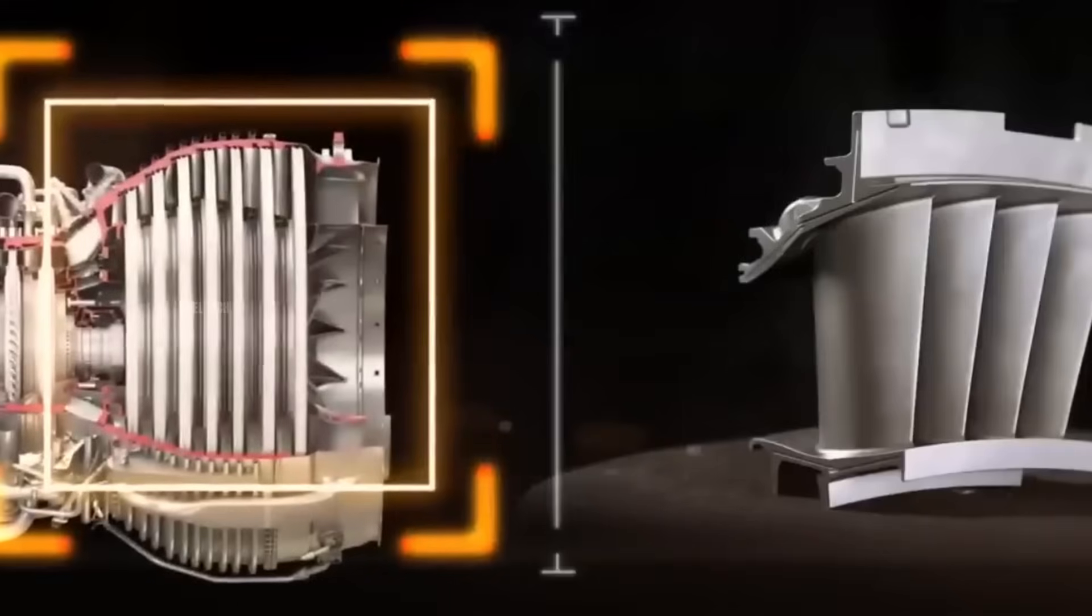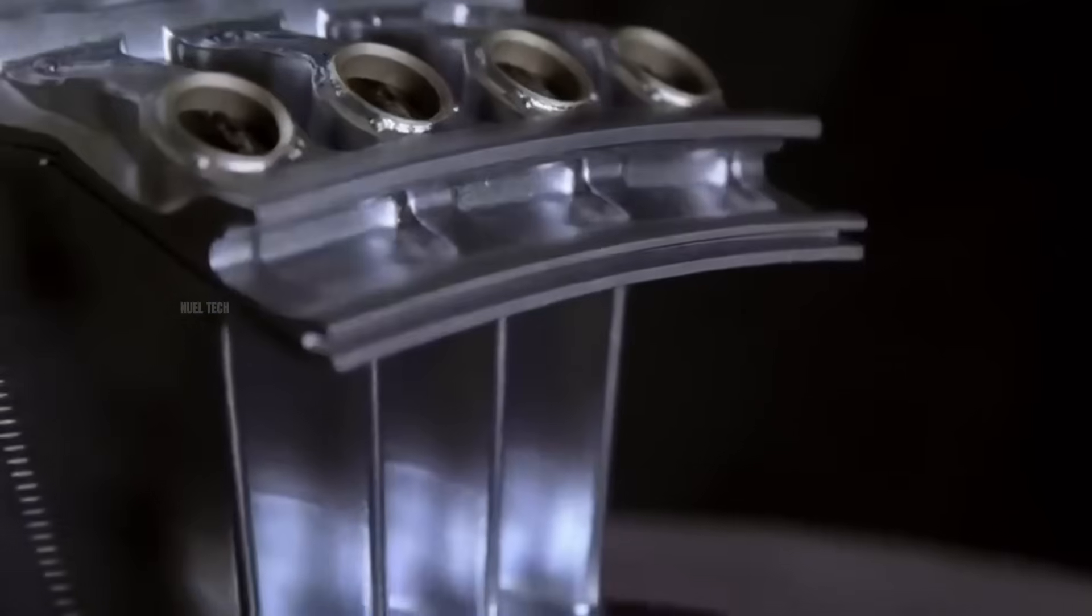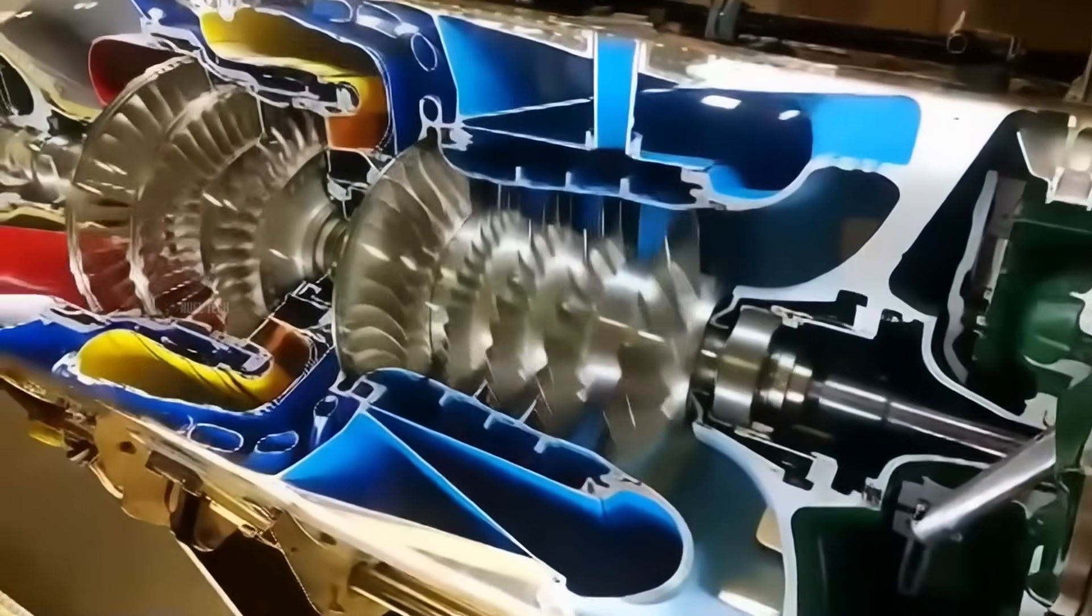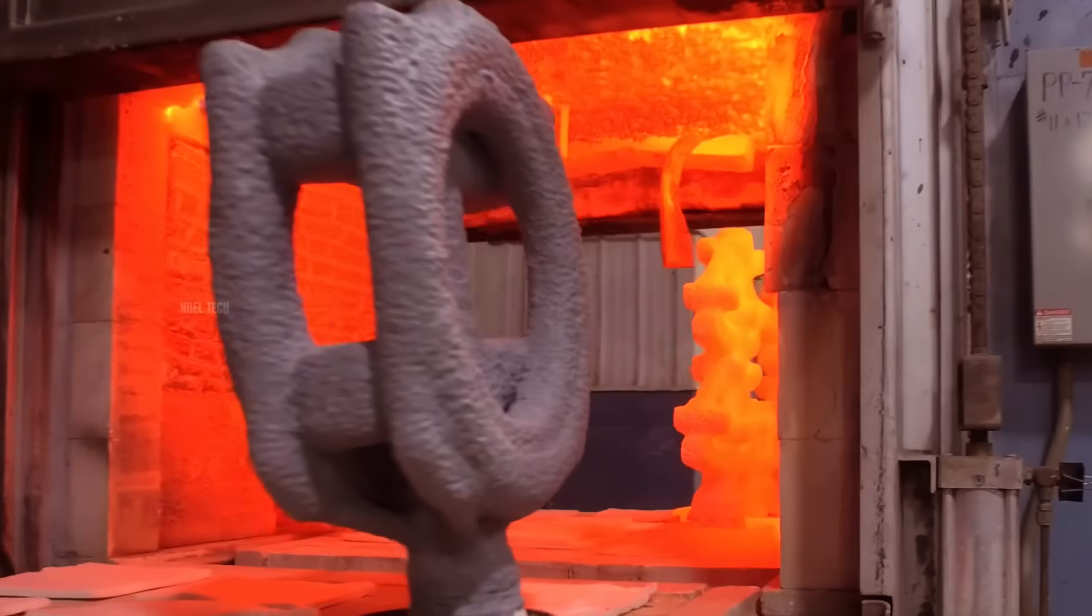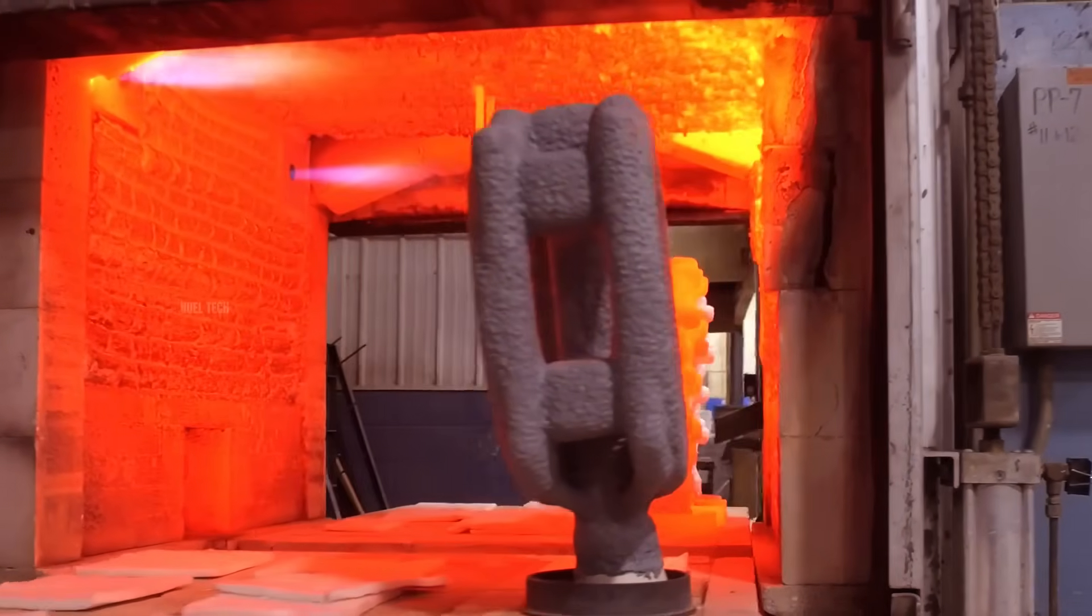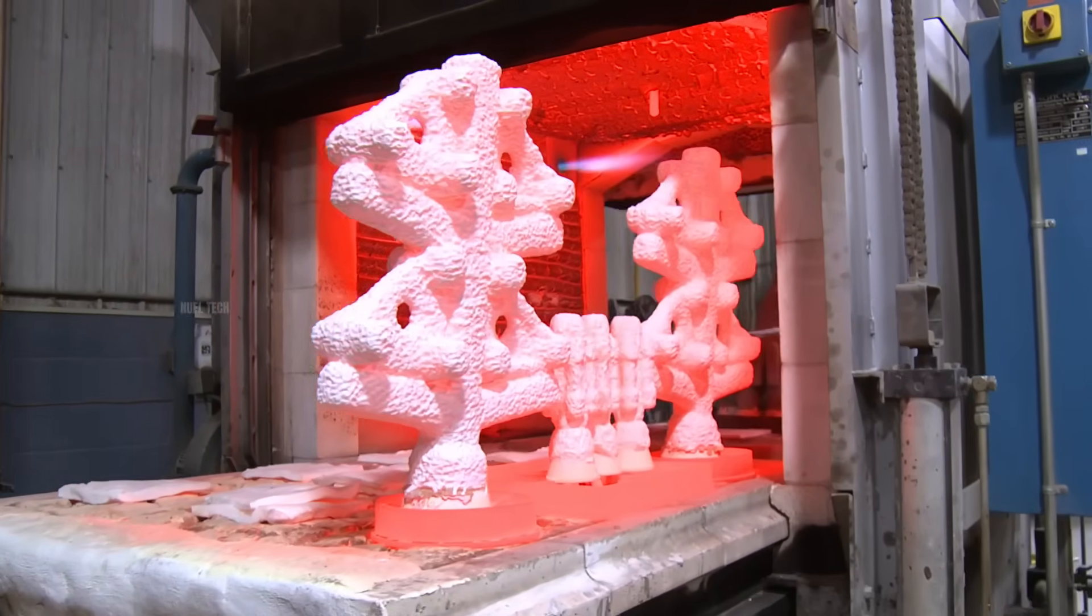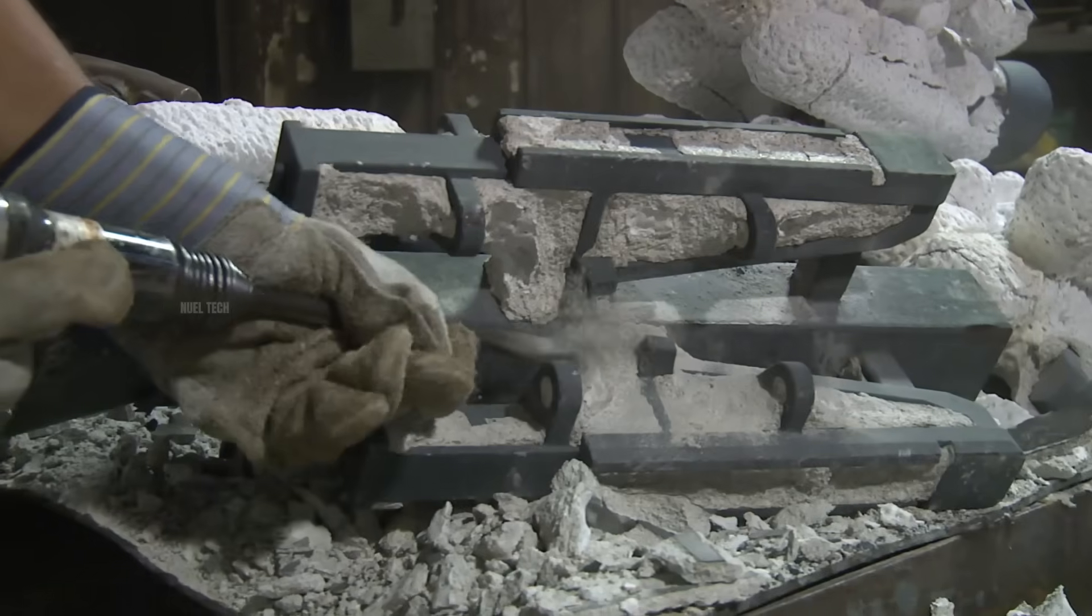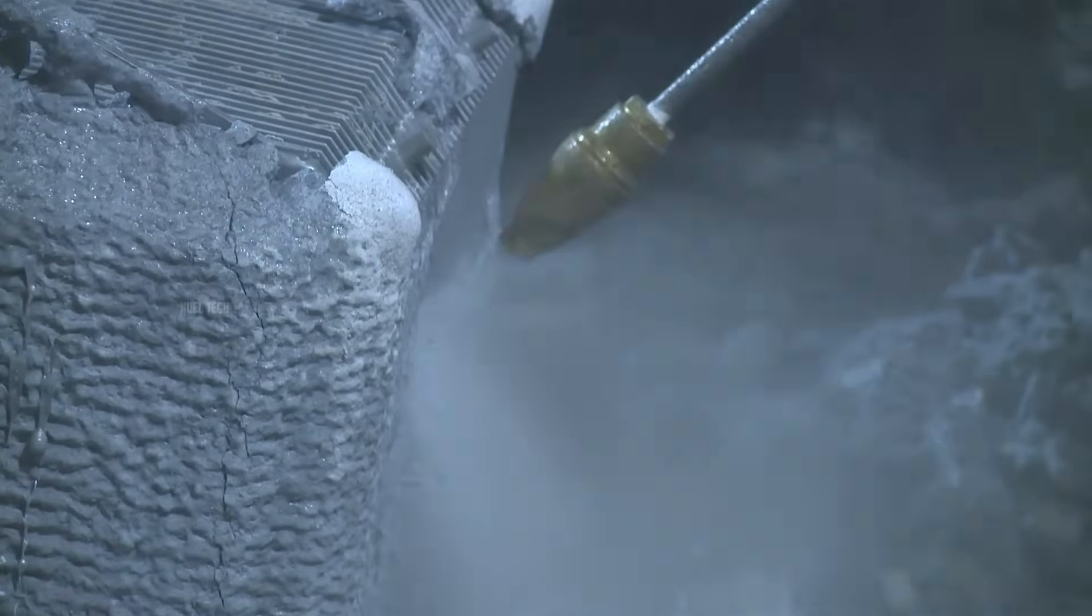However, first-stage turbine blades, which are exposed directly to combustion and include internal cooling passages, are produced using a specialized technique known as investment casting or lost wax casting. This method has been known since ancient times but has evolved into a highly precise and complex manufacturing process today.